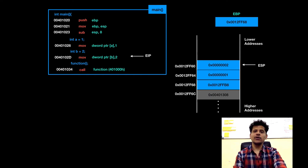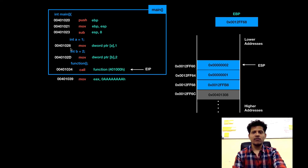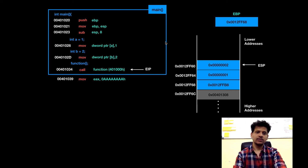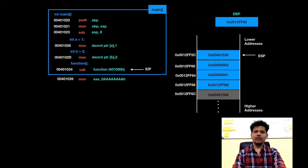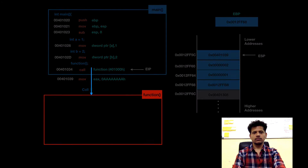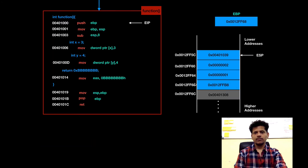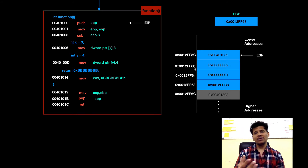Next C statement is we are calling function. The assembly equivalent is call function. We will take the next instruction's address and put that onto the stack, because when function will finish its execution it can return to main using that address. We will pass the control to the function. Now as you can see, our viewing area is full, so I will hide these elements and show them again when we need them.